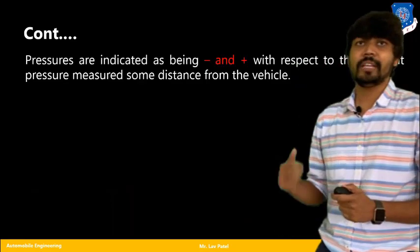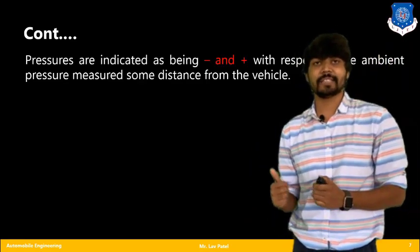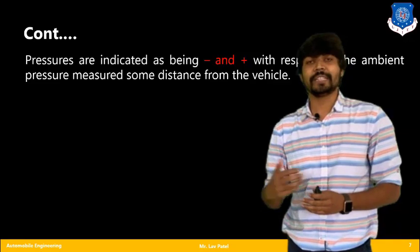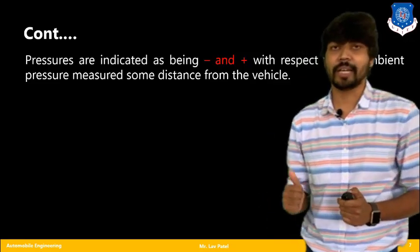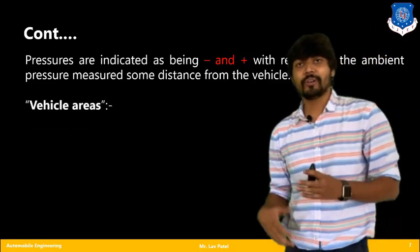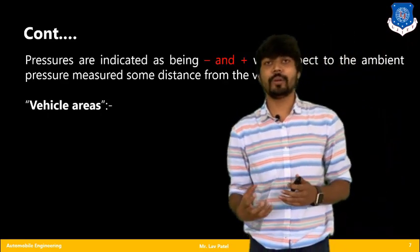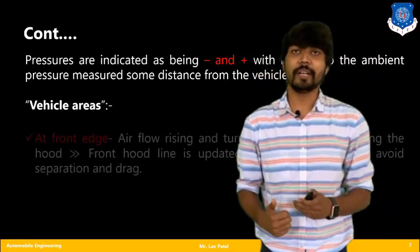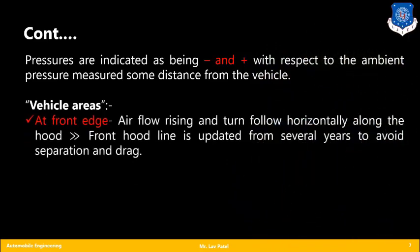Now let us look at the different signs — positive and negative — used to present the pressure distribution diagram for a vehicle. Looking at different vehicle areas: at the front edge, airflow rises due to the frontal impact of air and then follows horizontally along the hood according to the hood shape. The front hood design has been updated over the years to reduce drag value.